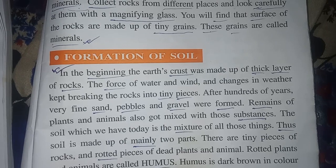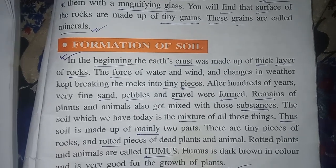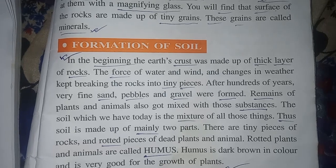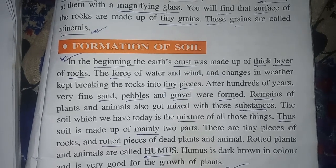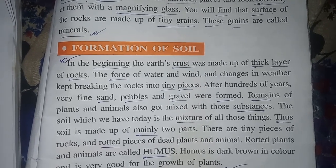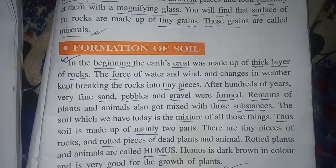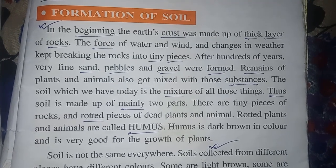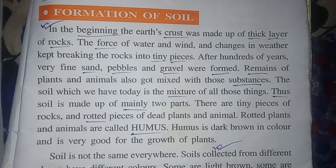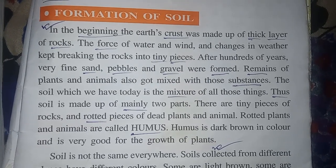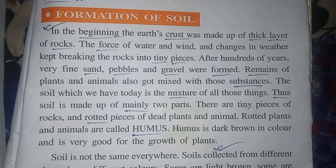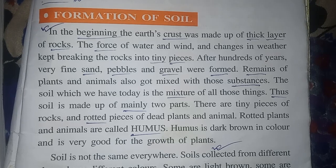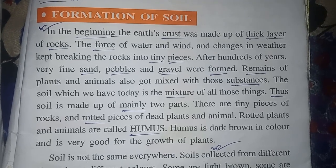Remains of plants and animals also got mixed in, and the soil which we have today is a mixture of all those things. Soil is made of mainly two parts: tiny pieces of rocks, and rotted pieces of dead plants and animals. Rotted plants and animals are called humus. Humus is dark brown in color and is very good for the growth of plants.